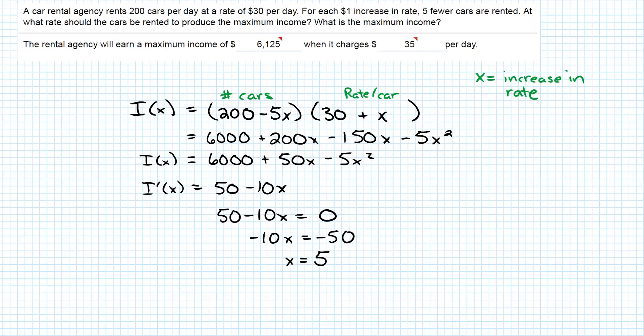Now I need to figure out what to do with my answer. What's X? X is an increase in rate. So what are they asking me for? The rental agency will earn a maximum income of... we see what the answer is here. When it charges blank per day. If I need to figure out what the maximum income is, I need to take that 5 and plug it into my income function.